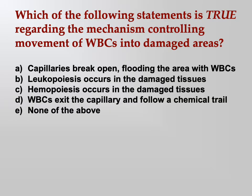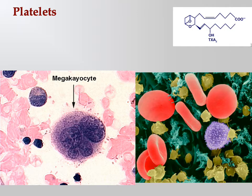Which of the following is true regarding the mechanism controlling movement of white blood cells into damaged tissues? The answer is that white blood cells exit the capillary and follow a chemical trail — that's diapedesis and positive chemotaxis. The white blood cells squeeze out of the capillary and then follow the chemical trail to find the pathogens.